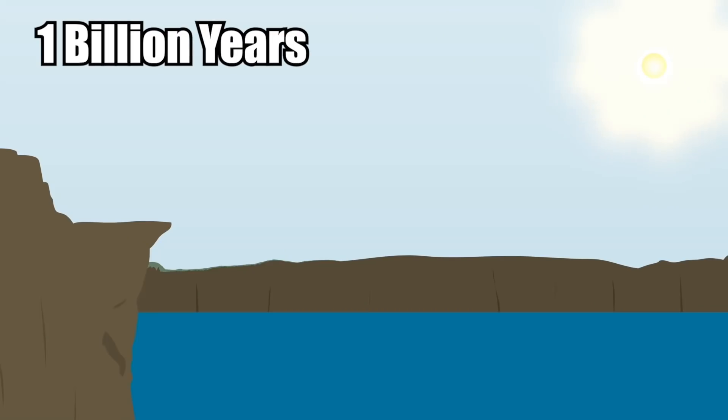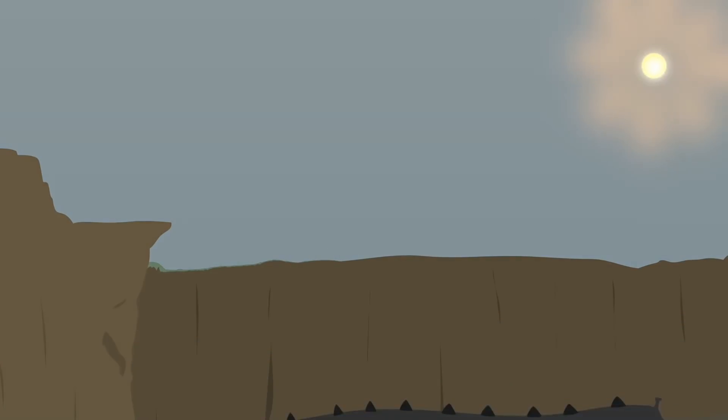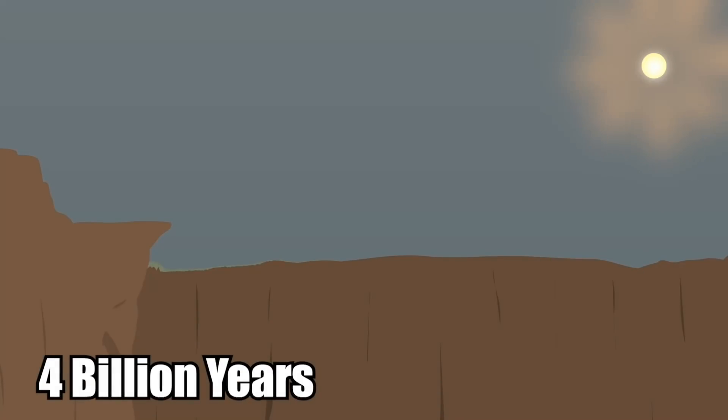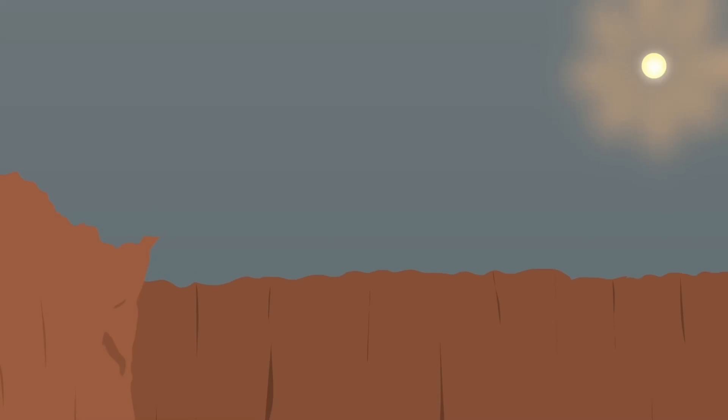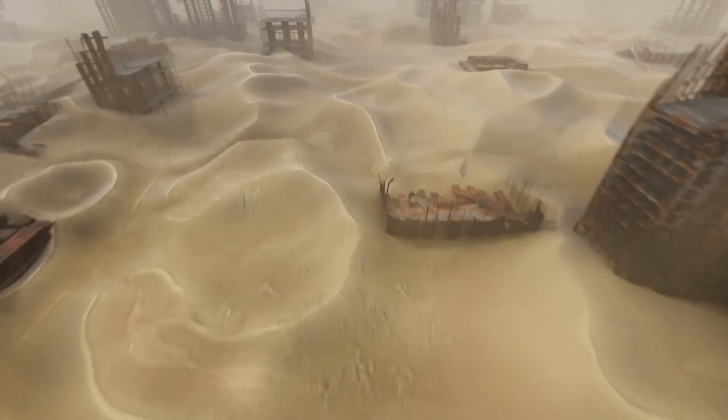In roughly 1 billion years, the oceans will evaporate, bringing the carbon cycle to an end. Within 4 billion years, a runaway greenhouse effect will heat the Earth's surface to high enough temperatures to melt it. By then, all life will be extinct anyway.